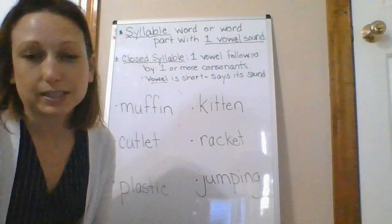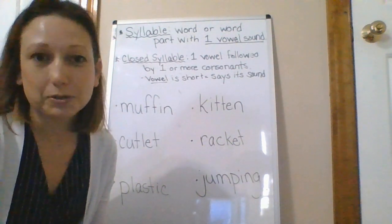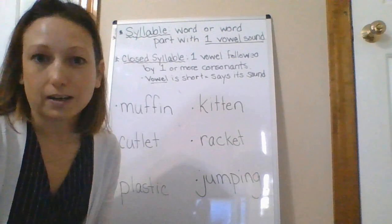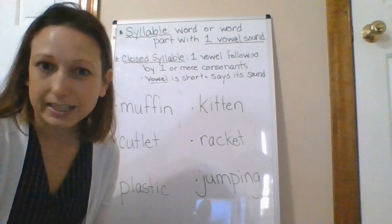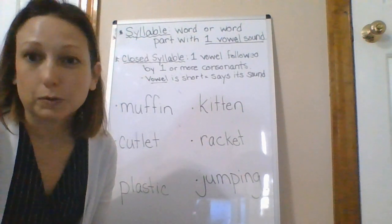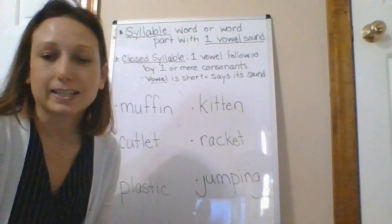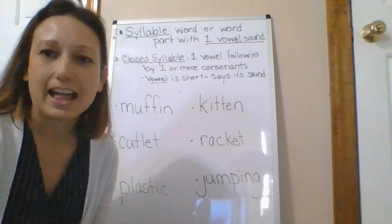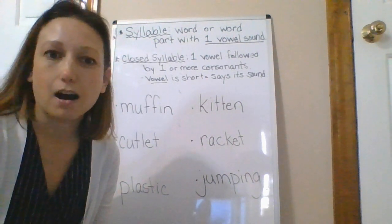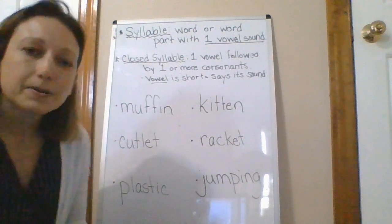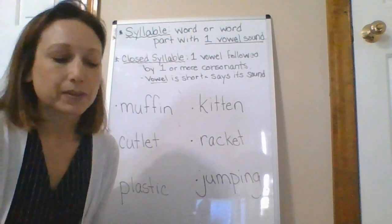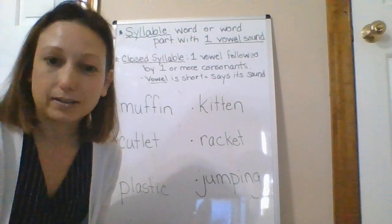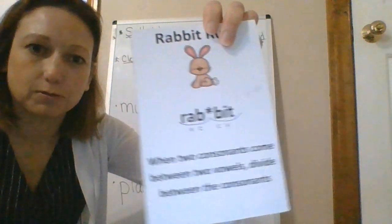Today we are focusing on closed syllables, which we discussed was one vowel followed by one or more consonants. The vowel is short, which means it says its sound — A, E, I, O, or U. Those are the short vowel sounds. So our rule today that we are learning about is the rabbit rule.